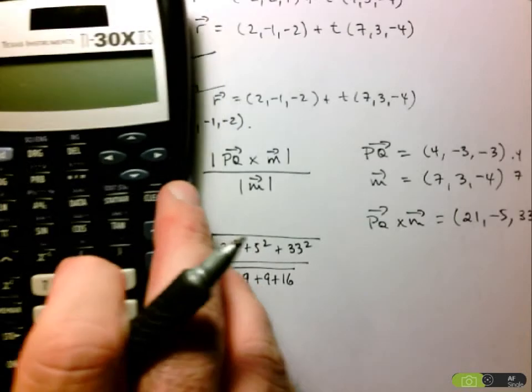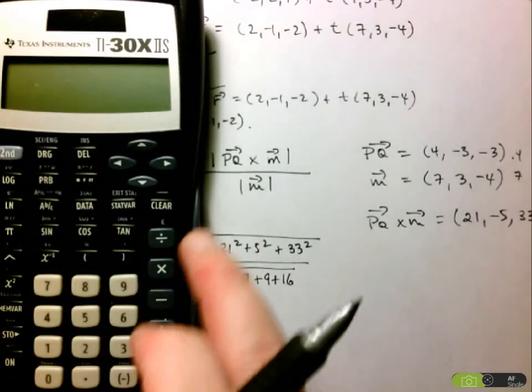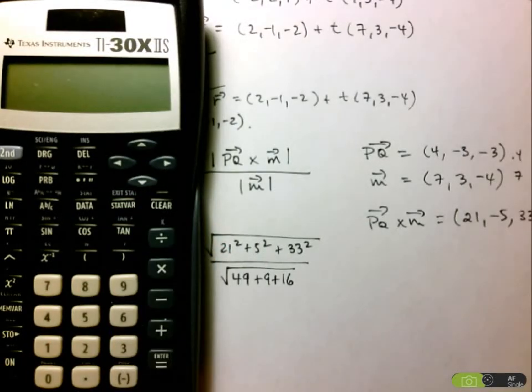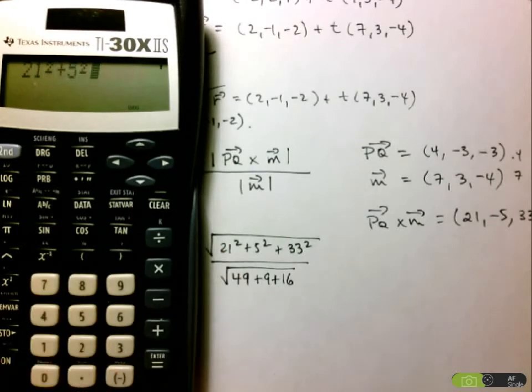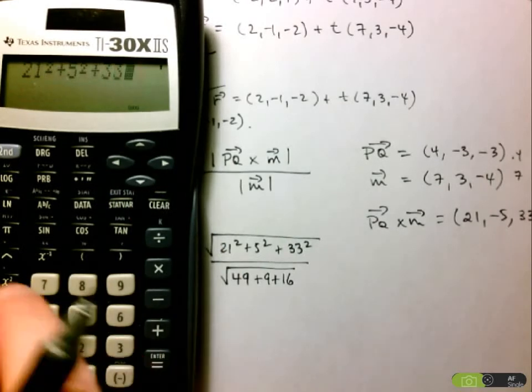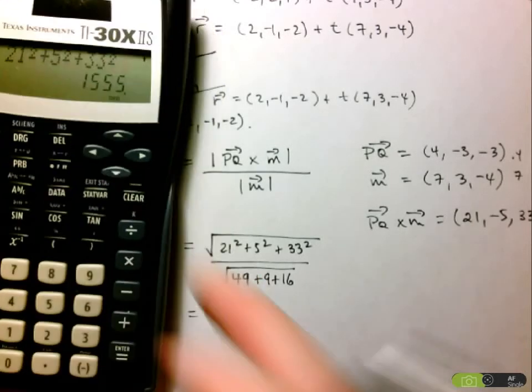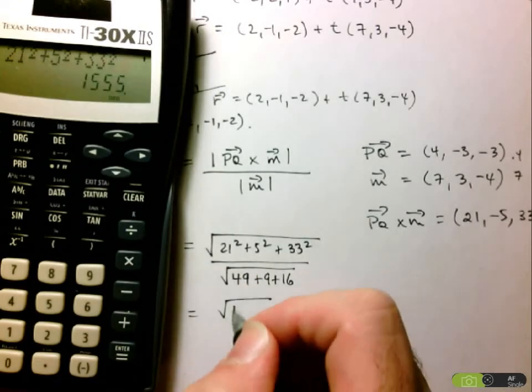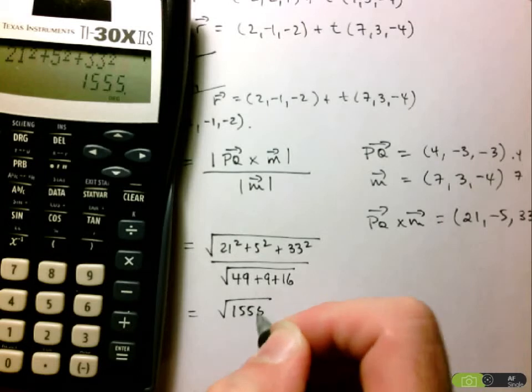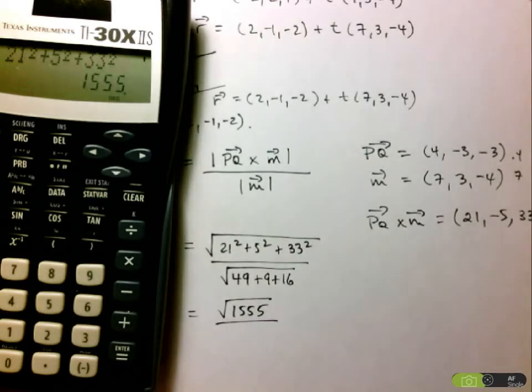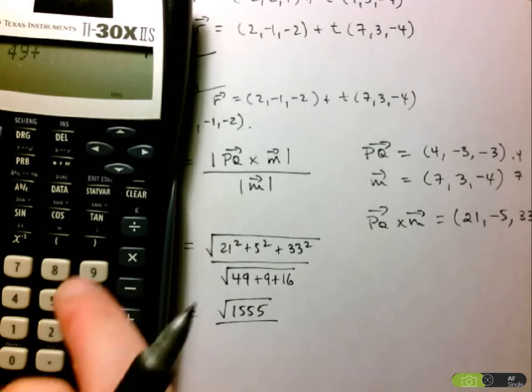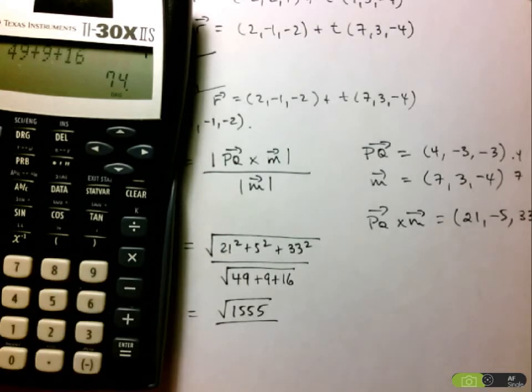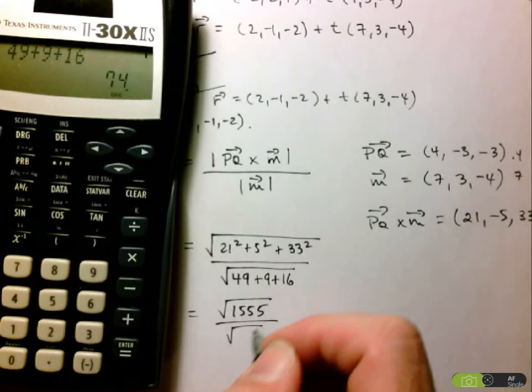So let's see what we have. We have 21 squared plus 5 squared plus 33 squared. So here we have the square root of 1555. And in the denominator we've got 49 plus 9 plus 16, square root of 74.